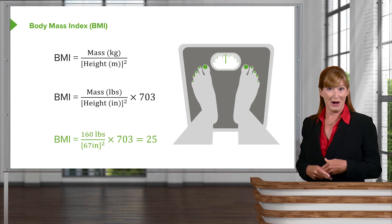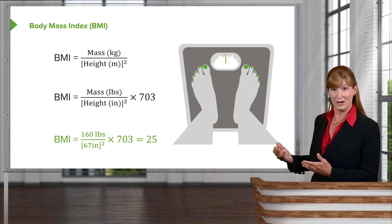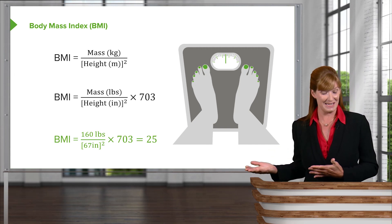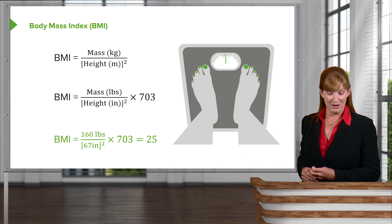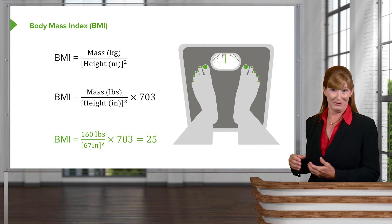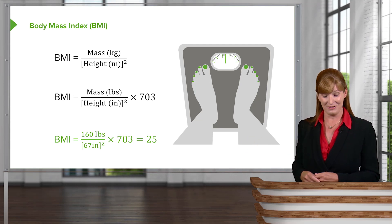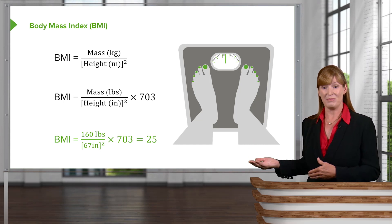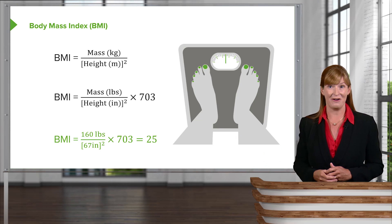Let's calculate a body mass index for an individual who is 160 pounds and 67 inches tall using the American imperial system. We multiply by a factor of 703 and we get the same number whether we use imperial or metric — a body mass index of 25.